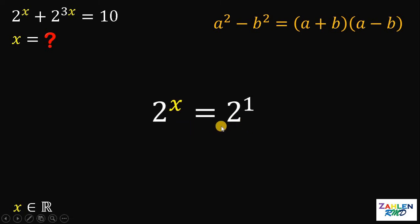Since we have the same base and they are equal, therefore, their exponent must be equal. Therefore, x must be equal to 1.